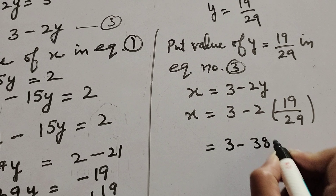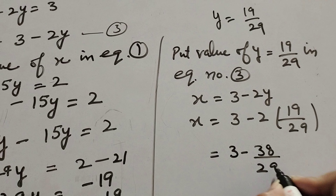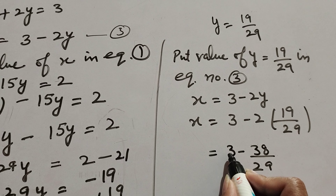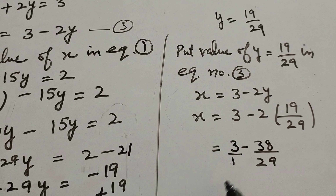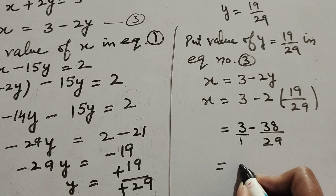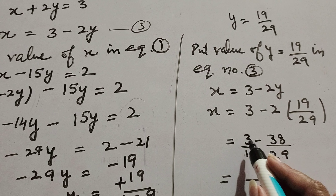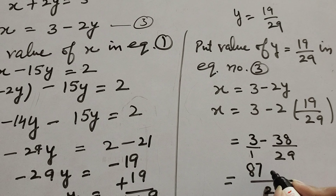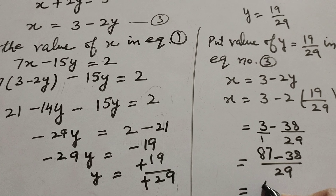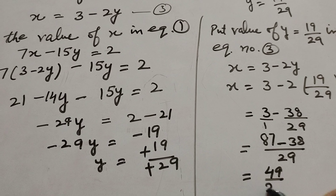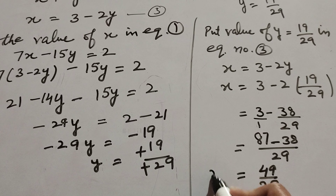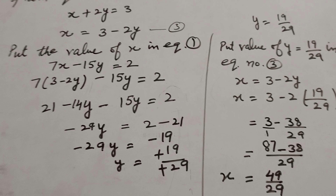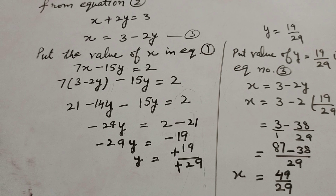2 multiplied by 19 is 38, so x = 3 - 38/29. Since 3 is a whole number, we write it as 87/29. So x = 87/29 - 38/29 = 49/29. Therefore x = 49/29. Thanks for watching, like and share my video, and subscribe to my YouTube channel.